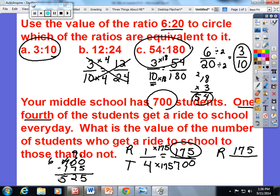And I get 525 that do not get a ride to school. This is a fraction, we have to make sure it's simplified. I'm going to divide them both by 25. 175 divided by 25 is 7, and I get 7 over 21.